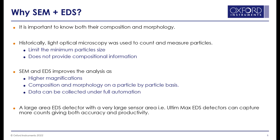Historically, light optical microscopy was used to count and measure particles. This process requires time, limits the minimum particle size that can be detected, and does not provide compositional information. The use of scanning electron microscopy and energy dispersive X-ray spectrometry improves the analysis, as higher magnification can be used, and the composition and morphology can be combined on a particle by particle basis. Furthermore, the data can be collected under full automation.